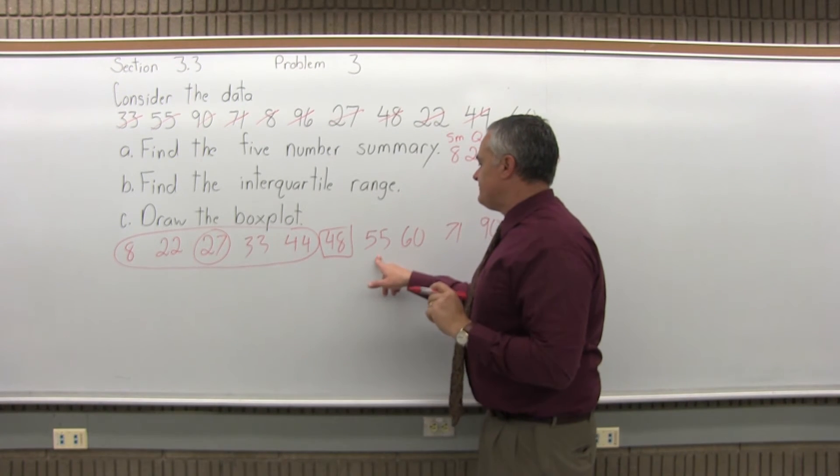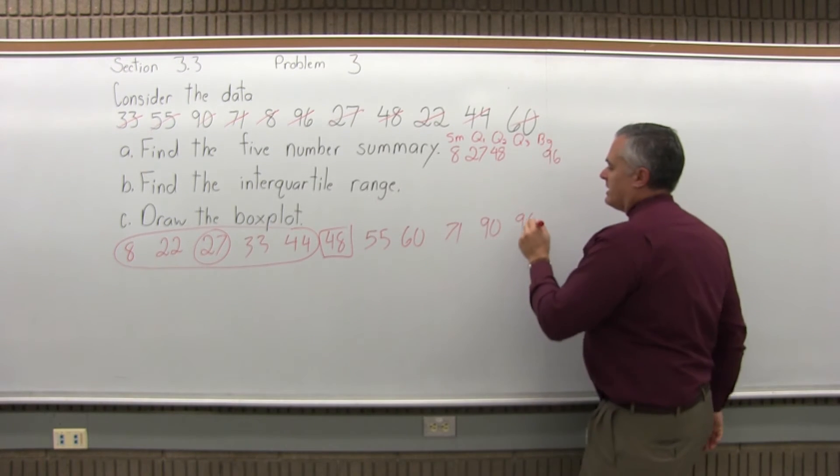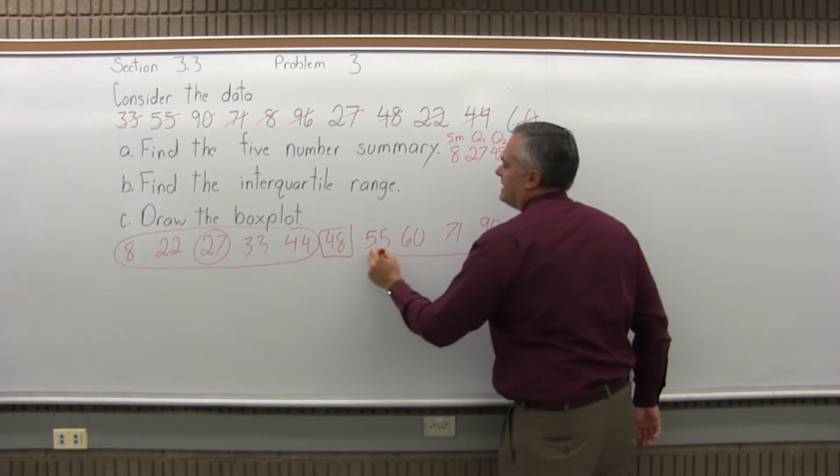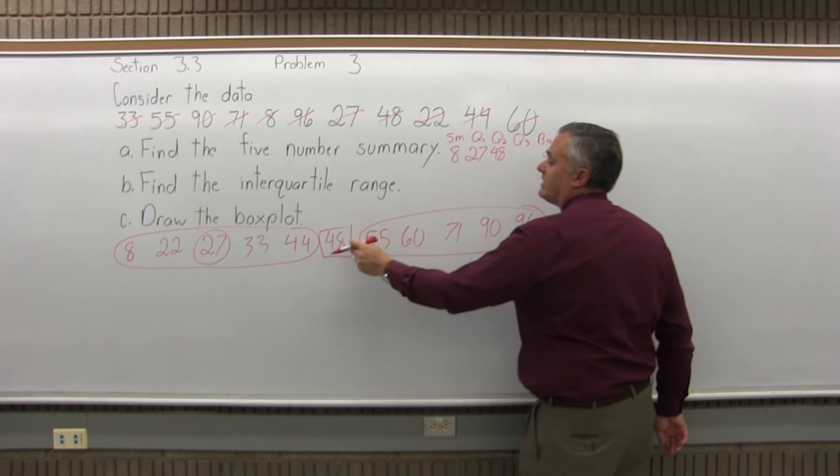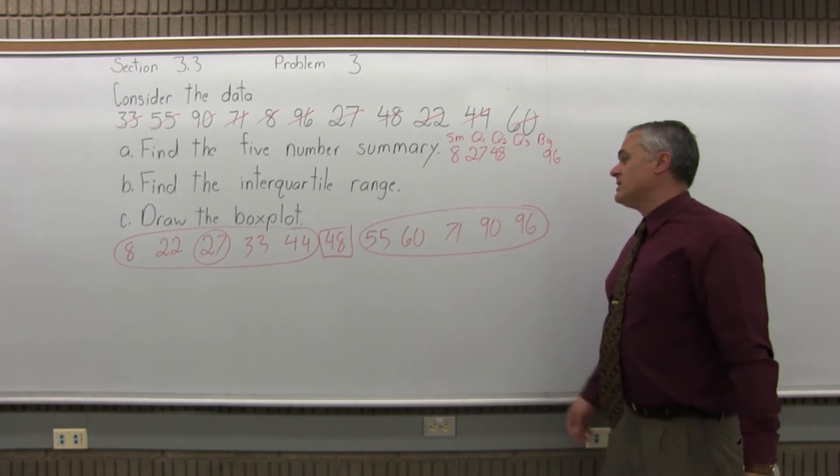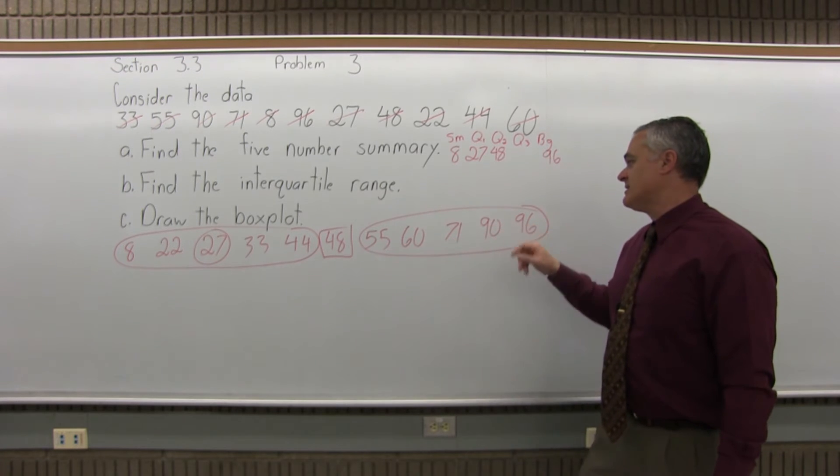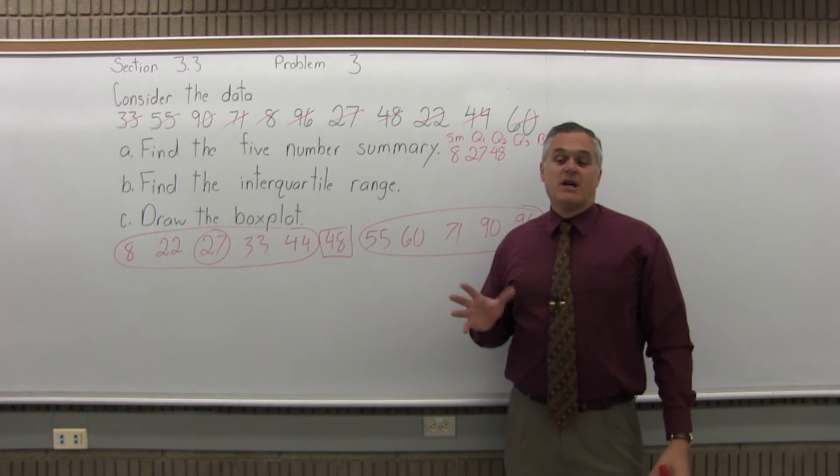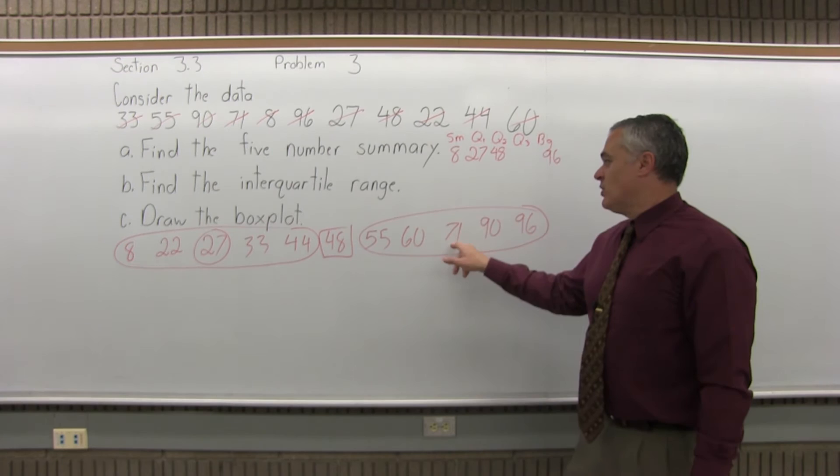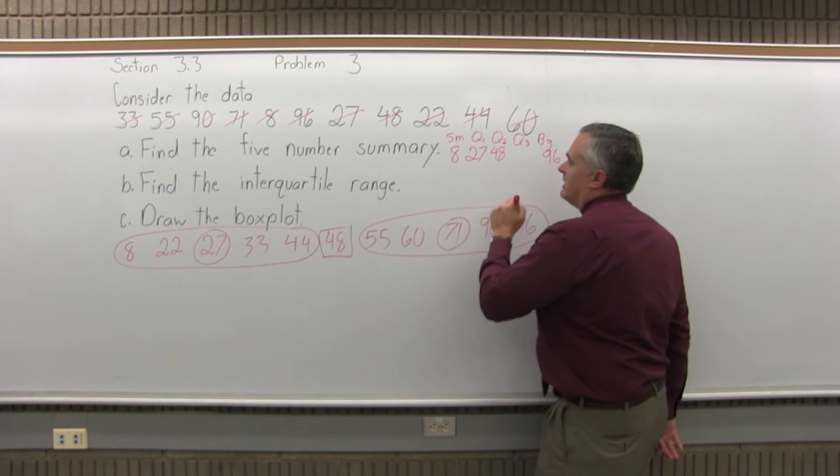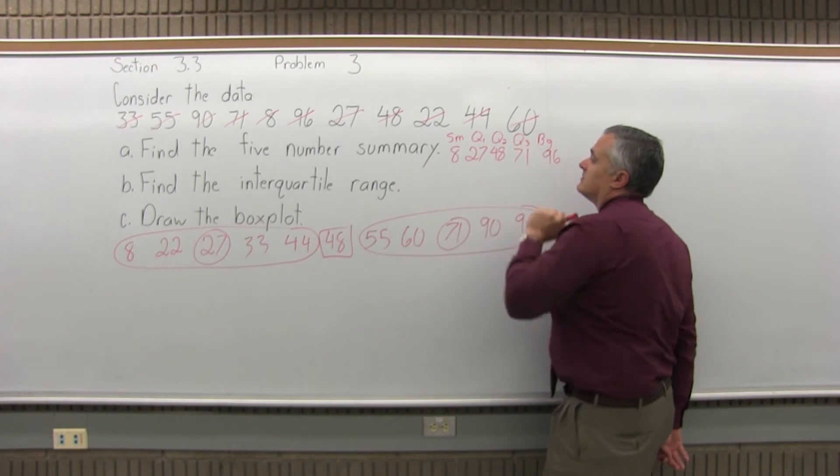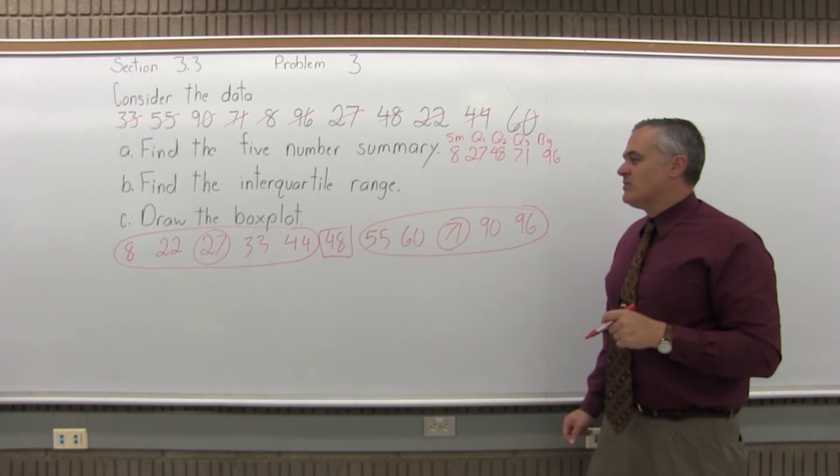And then the answer for Q3 is the median of the upper half of the data, not including Q2. So it'd be the bigger five values. In this case, 55, 60, 71, 90, and 96. Again, five values. It's an odd amount of data. There's one value right in the middle, which is 71. So that's Q3. There's my five-number summary.